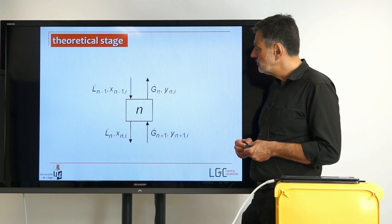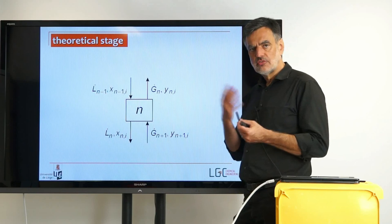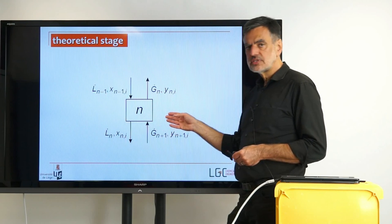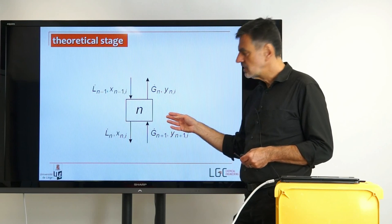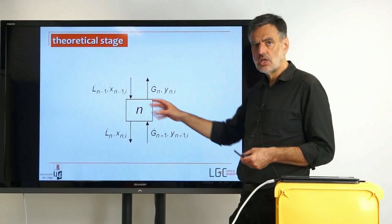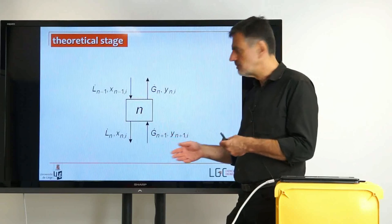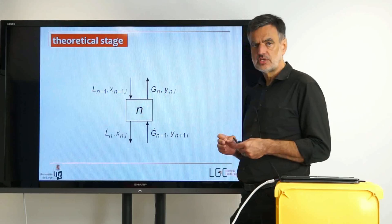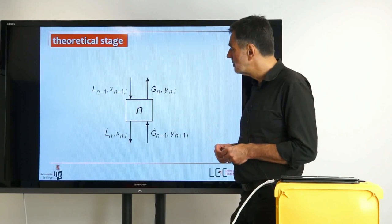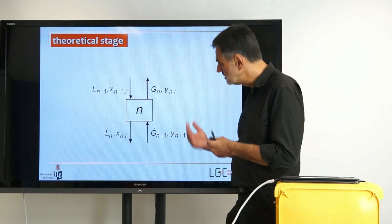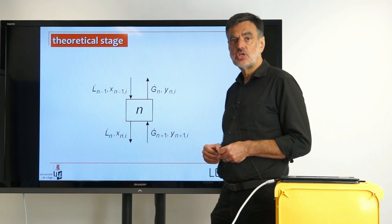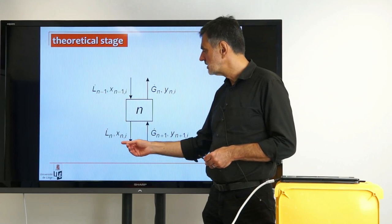Now we want to set up the balances, and we want to assume what we have assumed for the McCabe-Thiele derivation already, and that is that the overall process is in steady state. Steady state means there is no change within, so the left side of the equal sign is zero — no accumulation within that theoretical stage. On the right-hand side, with a positive sign, are the entering streams L-dot n-1 and G-dot n+1, and the leaving streams with negative sign are L-dot n and G-dot n.